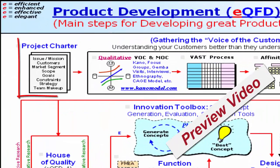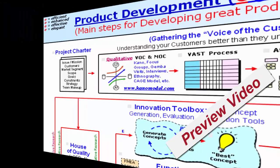For starters, we're defining the project. We're thinking about who the customers are, what market segments we're going after, what are the scope and goals of the project, what constraints we have, who's going to be on the team, and those types of things.